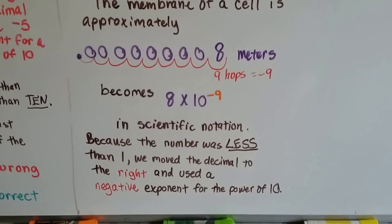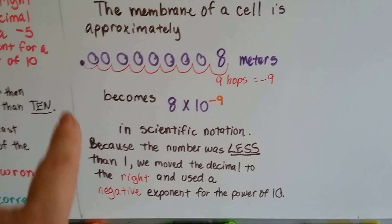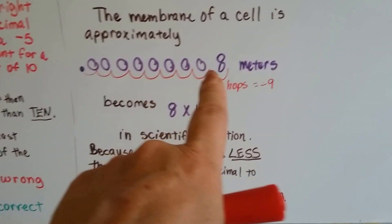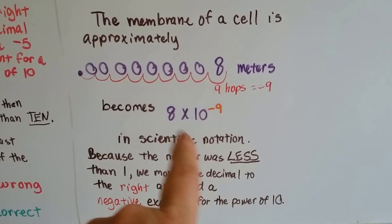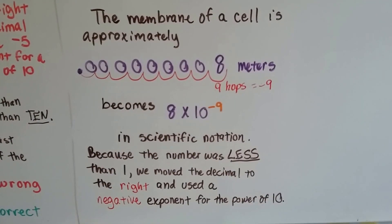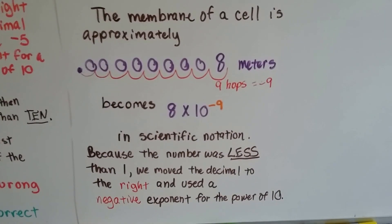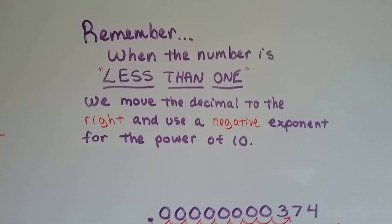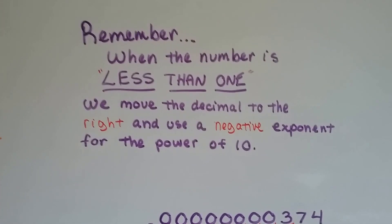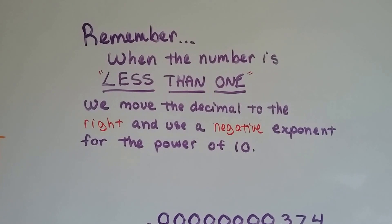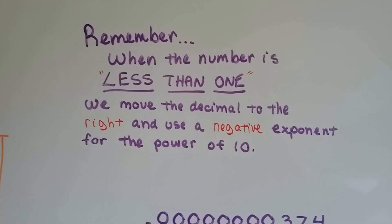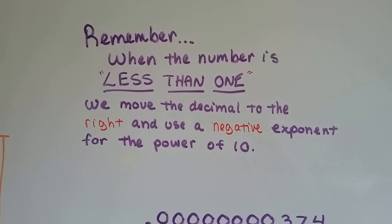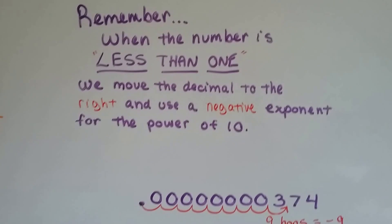It's for those really long decimals with lots of zeros — it's just a lot easier to write it that way. So remember, when the number is less than one, when it's in between zero and one, we move that decimal to the right and use a negative exponent for the power of ten.